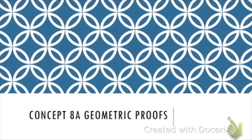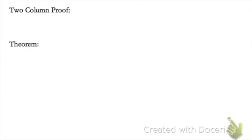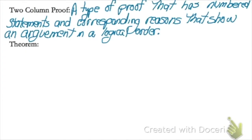We are going to be using two-column proofs, which is a type of proof where you have numbered statements and reasons that lead you through a logical order to a conclusion.